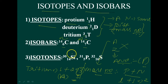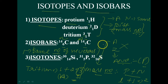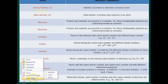Isotones are species having the same number of neutrons but different atomic mass and atomic number. They have the same number of neutrons but different atomic number and atomic mass. These are called isotones.